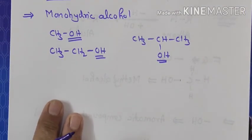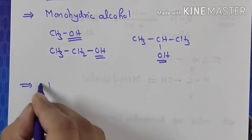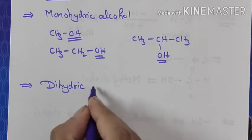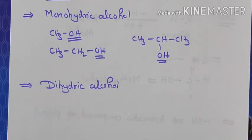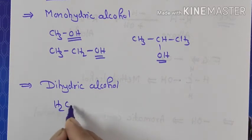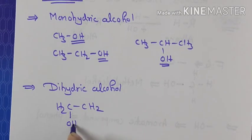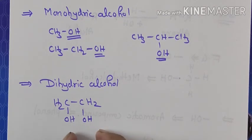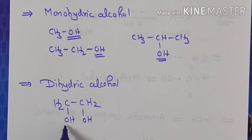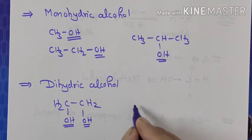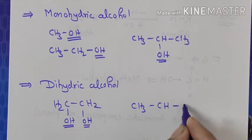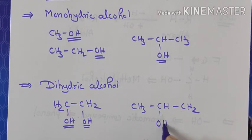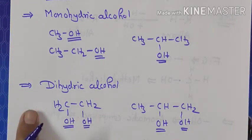Next is dihydric alcohol. Dihydric alcohol is when two OH groups are present. For example: HOCH2CH2OH — two OH groups are present. That's why it is called dihydric.